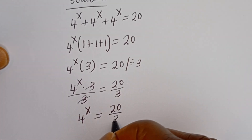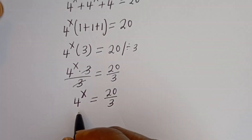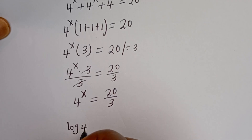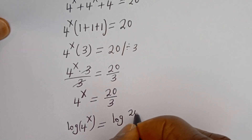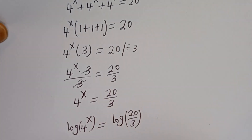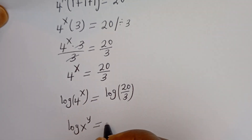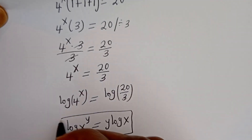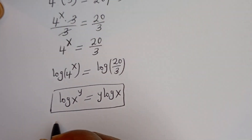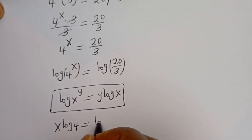Now we can take the log of both sides. Log of 4 to the power of s is equal to log of 20 divided by 3. Then, if you have log x to the power of y, this is equal to y log x. So this can be written as s log 4 is equal to log of 20 over 3.